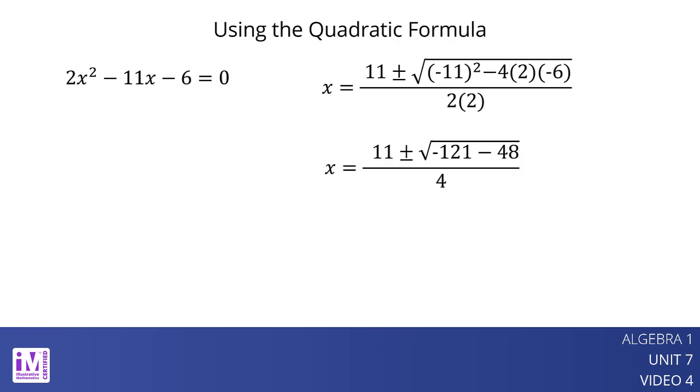What errors do you see in the next step? A common error is forgetting that squaring a negative number gives a positive number. Negative 11 squared is positive 121, not negative 121.